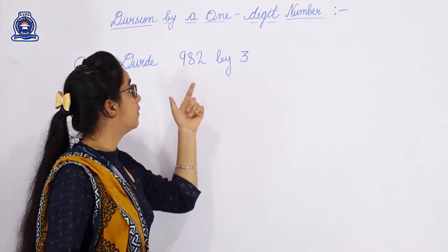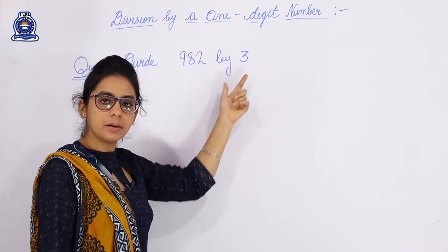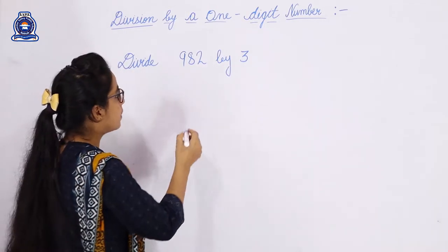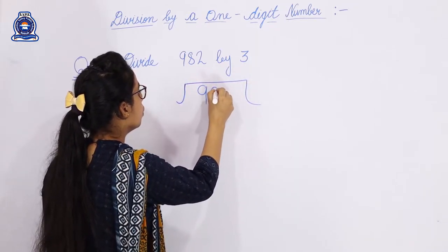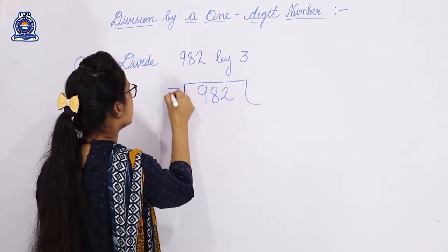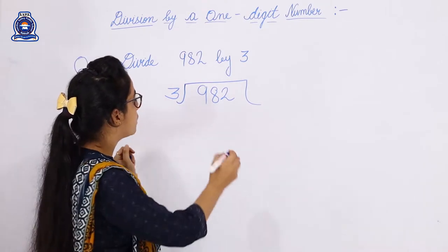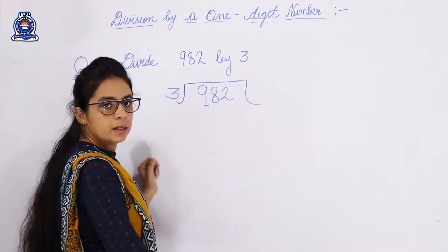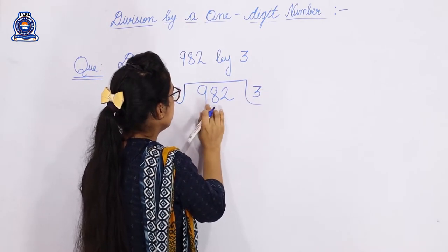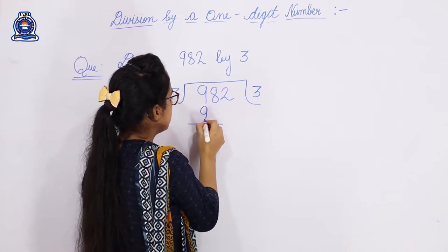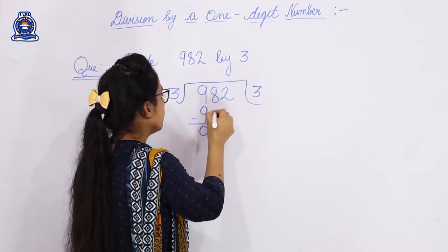Our next question is divide 982 by 3. It's also a one-digit number, so it's easy. Here dividend is 982 and our divisor is 3. Let's start: 3 threes are 9, so we write 3. 3 threes are 9, then 9 minus 9 equals 0. Then we carry 8, making 8.